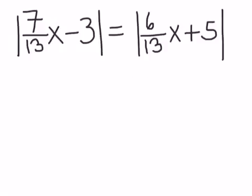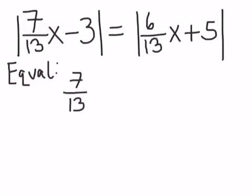To do this, we'll first look at the first possibility: what if they are equal? If these two quantities inside the absolute value are equal, we solve the equation where we just drop the absolute values. Take 7 thirteenths x minus 3 and set that equal to 6 thirteenths x plus 5.